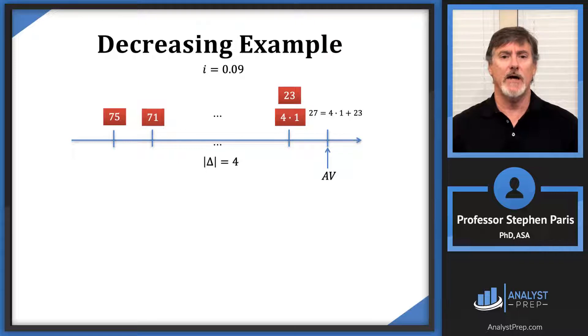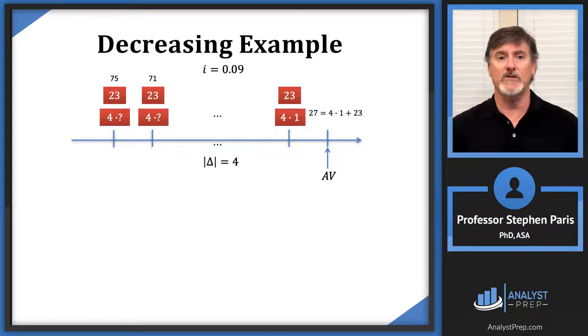I'm going to replace the 27 by a 23 on top of the 4 times 1. That gives me an indication of how to replace the other payments. I'm going to use 23s across the entire top, so the 75 I'm going to replace with a 23 plus something, and the 71 I'm going to replace with a 23 plus something. The question is, what is the something? I want to think of that something as 4 times something else.